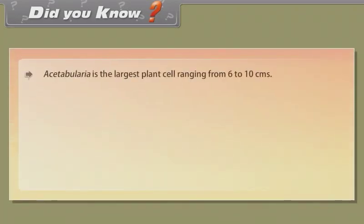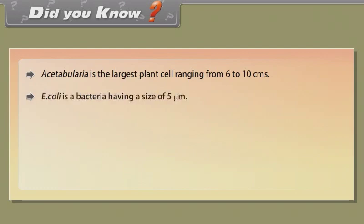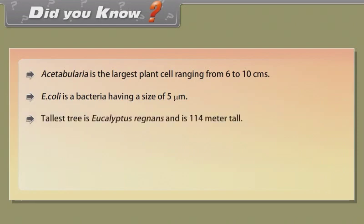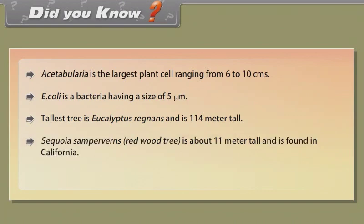Did you know? Acetabularia is the largest plant cell, ranging from 6 to 10 cm. E. coli is a bacterium having a size of 5 micrometers. The tallest tree is Eucalyptus regnans and is 114 meters tall. The elephant is the largest land animal.